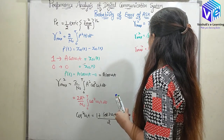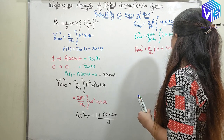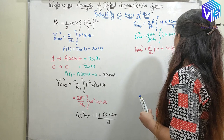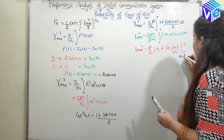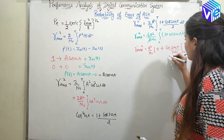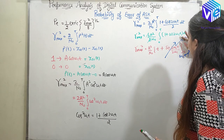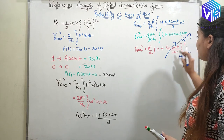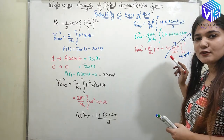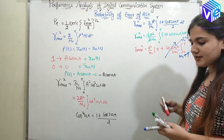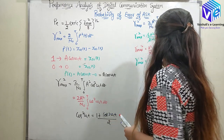Gamma_max² = (A²/N₀) × [ t + sin(2ωc·t) / (2ωc) ] evaluated from 0 to T. Here the carrier frequency ωc is very much greater than zero, so the sin(2ωc·t) term — whose numerator is bounded between −1 and 1 — is negligible for large ωc. Therefore gamma_max² = (A²/N₀) × T.